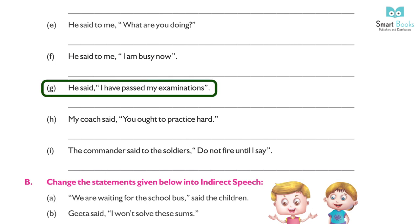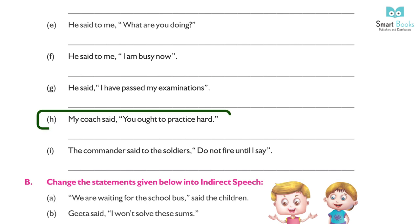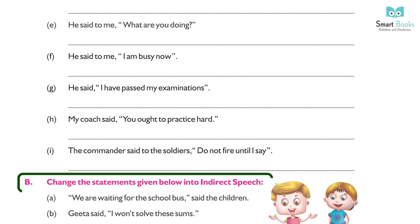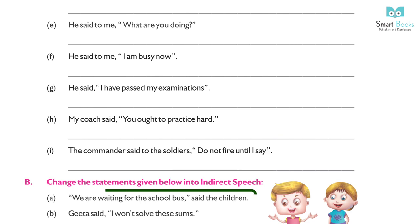(g) He said, 'I had passed my examination.' → He said that he had passed the examination. (h) My coach said, 'You ought to practice hard.' → I was told by the coach that I ought to practice harder. (i) The commander said to the soldiers, 'Do not fire until I say.' → The captain ordered the soldiers not to fire until he gave the signal.